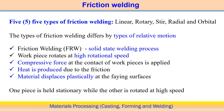In friction welding, relative motion between the two components at the interface is required for frictional heat generation. One piece is kept stationary while the other is allowed to rotate at high rotational speed. We will discuss linear, rotary, and friction stir welding processes; radial and orbital friction welding processes are outside the scope of this course.